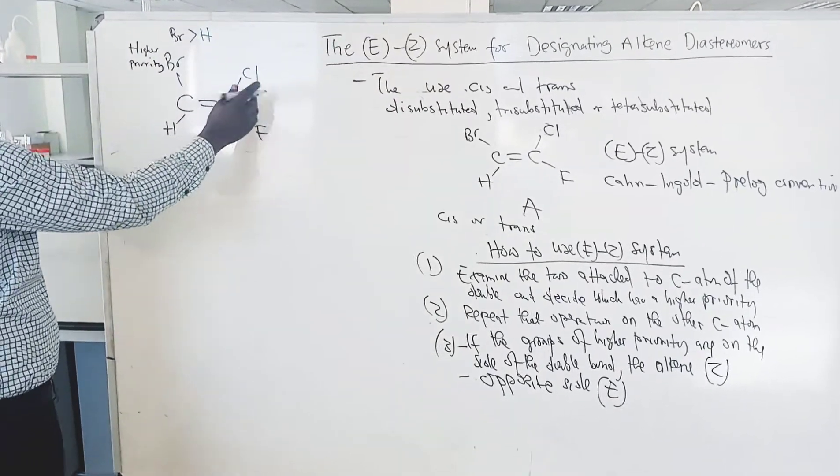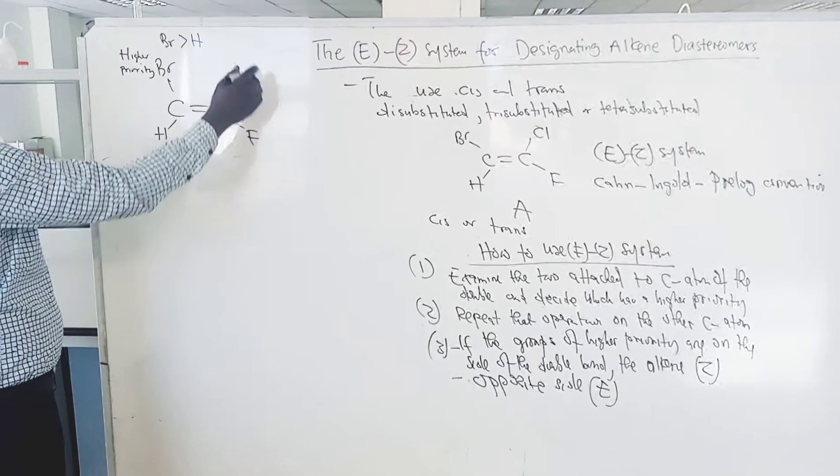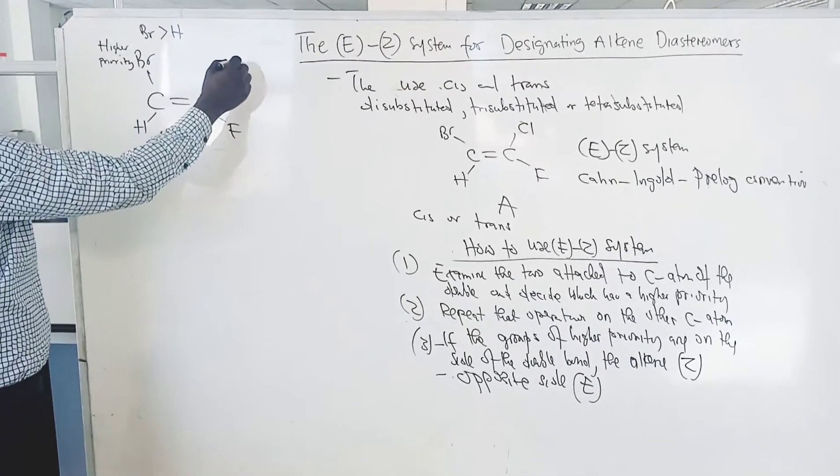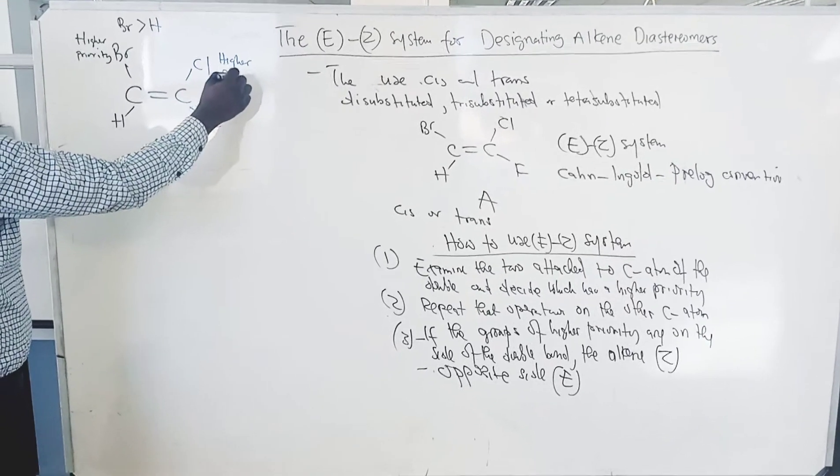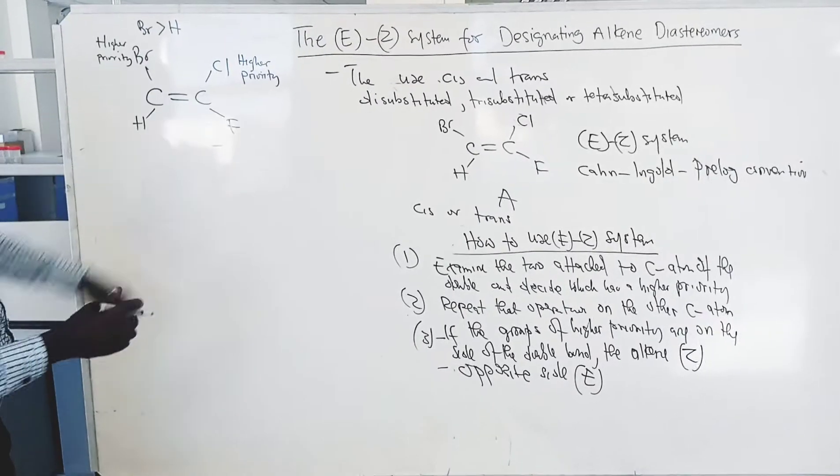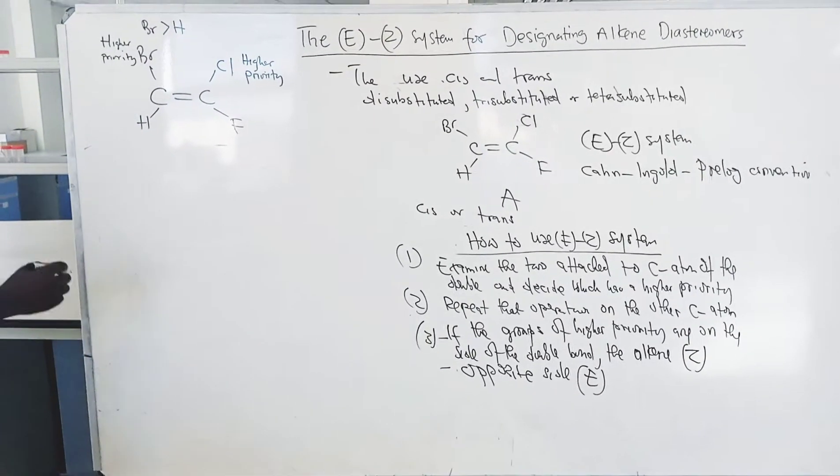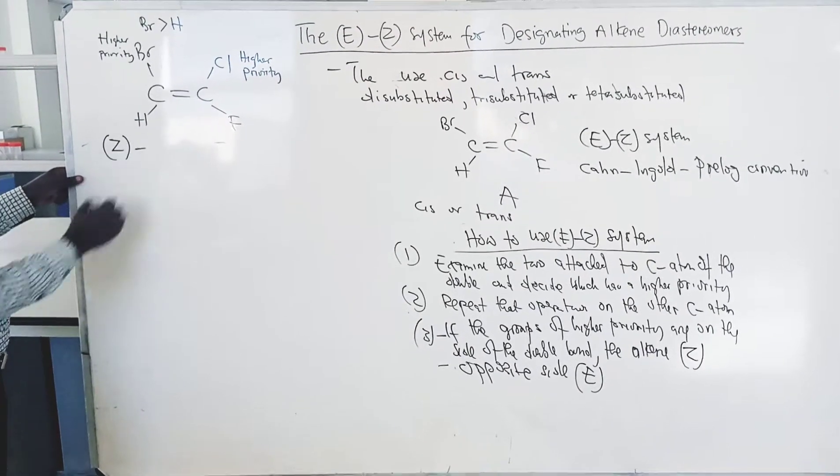Then we come to the next couple. We compare chlorine and fluorine. The one with the higher priority is chlorine. Higher priority. So, as you can see, the groups of higher priority are on the same side of the double bond. So, this alkene is designated Z.